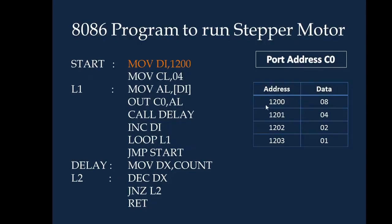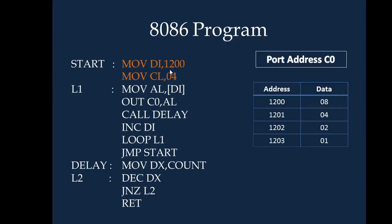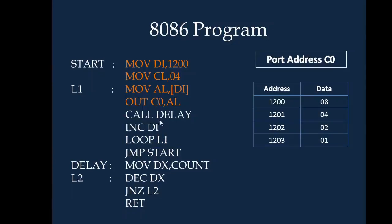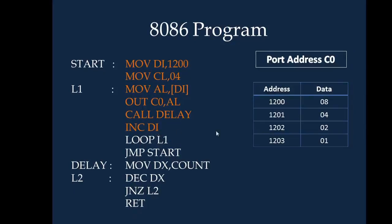The port address C0 is stored in the destination index register and the count is maintained as 4 because we have to send 4 values: 8, 4, 2, 1. The first value 8 is moved to AL and through that it is written to port C0. After writing this value you have to give some time for the stepper motor to move its position, so we have a delay subroutine. After the delay we increment DI, so DI becomes 1201, making it ready to send 04 in the next time.